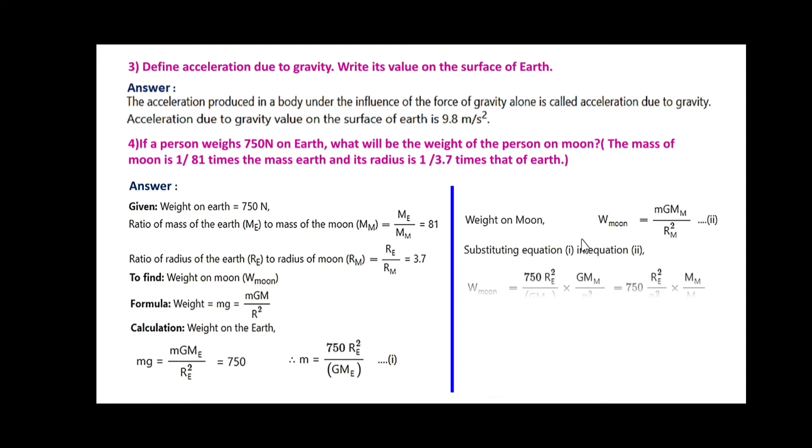Weight of the moon Wmoon = m·GMm/Rm². Substituting equations 1 and 2: weight on moon = 750·RE²/GME × GMm/Rm². This becomes 750 × (RE/Rm)² × Mm/ME. Substituting values: 750 × (3.7)² × 1/81. After calculating this, we are getting 126.8 N. The weight of the person on moon will be 126.8 N.